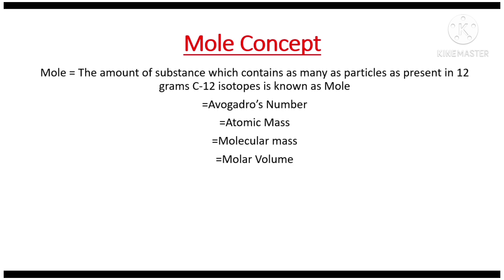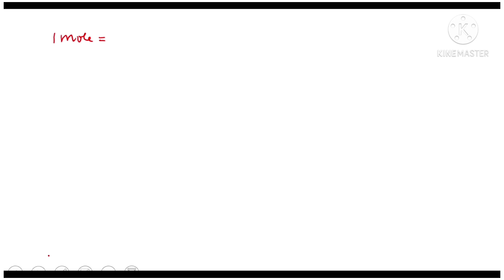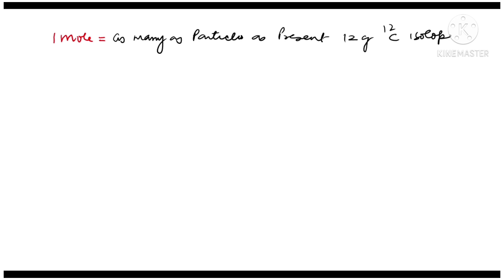How can we define the mole? The amount of substance which contains as many particles as are present in 12 grams of carbon-12 isotopes is known as one mole. One important thing — why carbon-12 isotopes? Isotopes means having the same atomic number but different atomic mass, so there must be another isotope of different atomic mass, that is C-14. We use carbon-12 and not carbon-14 because carbon-14 is radioactive in nature and can disintegrate over time.